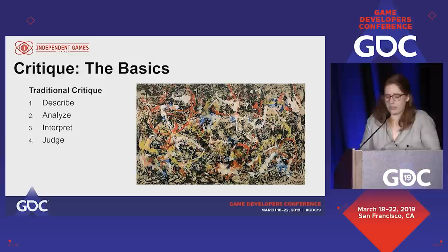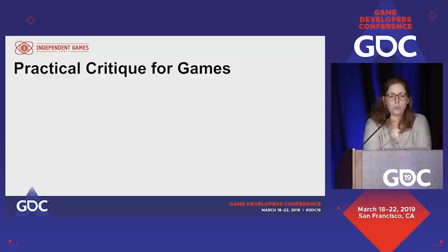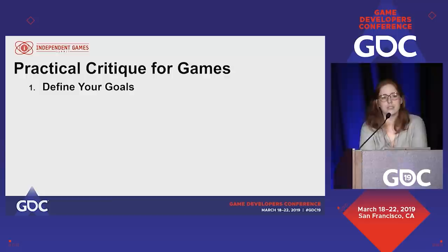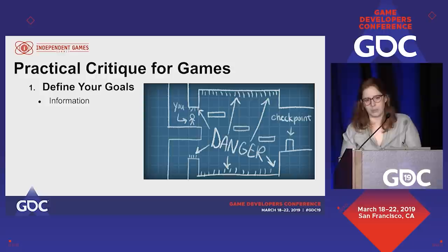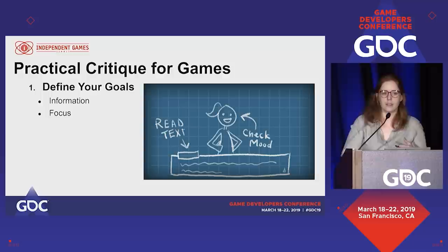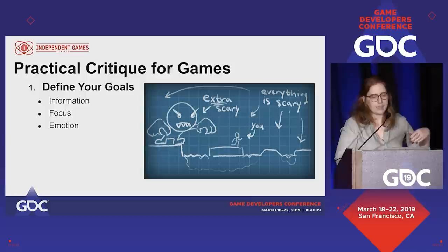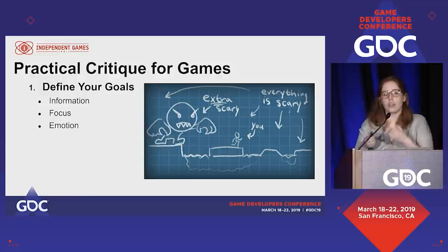So how does this apply to practical critique for game art? There's one key difference: you get to define your own goals. This is your game, you know what you want to do with your art. There are a few goals that are very common in game art. One is portraying information — you often want your player to be able to tell at a glance where danger is. You might want to control their focus, get them to look at something in particular like a face or dialogue. It's very hard to get players to actually look at dialogue. And then there's emotion.